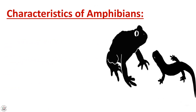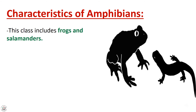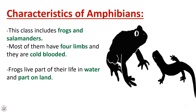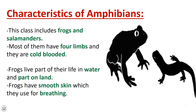Characteristics of amphibians: the word 'amphibians' refers to animals that live part of their life in water and part on land. This class includes frogs and salamanders. Most of them have four limbs and they are cold-blooded. Frogs live part of their life in water and part on land.